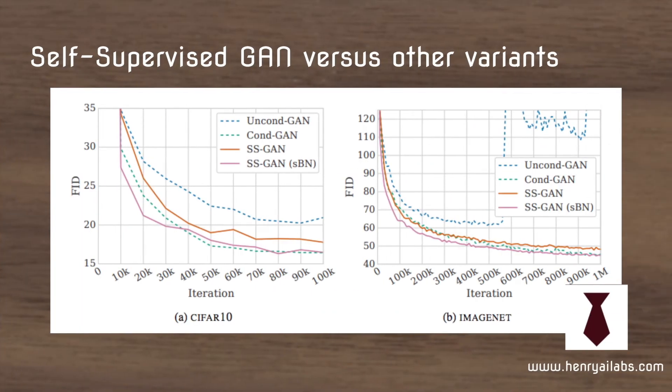Another plot shows a similar idea, comparing the conditional and unconditional GAN on two different datasets — CIFAR-10 and ImageNet. You can see how the unconditional GAN is completely incapable of even achieving the ImageNet generation quality.